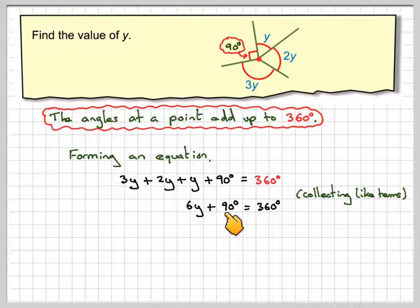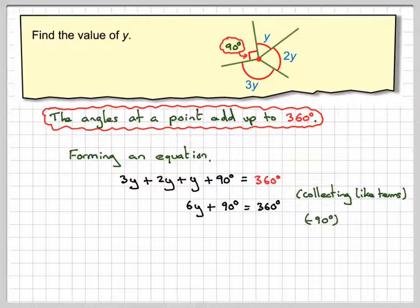Then the next thing we need to do is subtract 90 from both sides. Subtracting 90 from this side gives me 6y, and 90 from this side gives me 270.